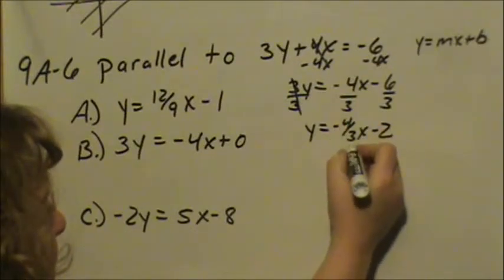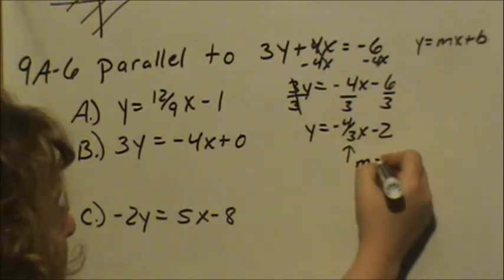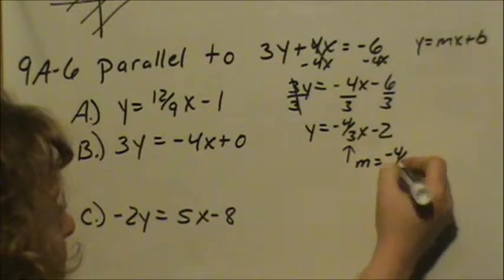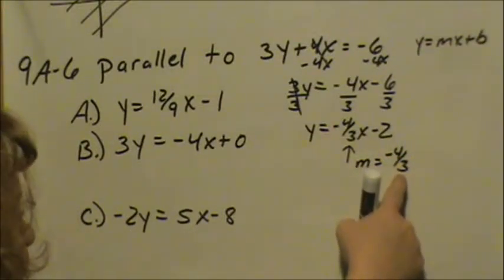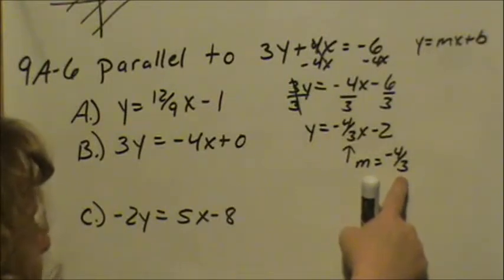So now we can see our slope is negative 4 thirds, and so if we want parallel to this line, that means all of our other lines have to have a slope of negative 4 thirds.